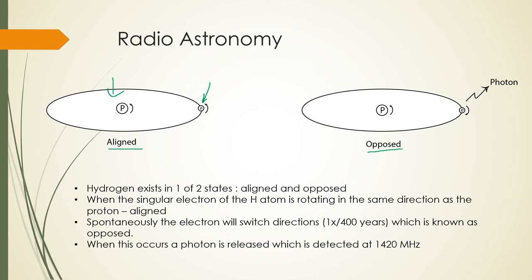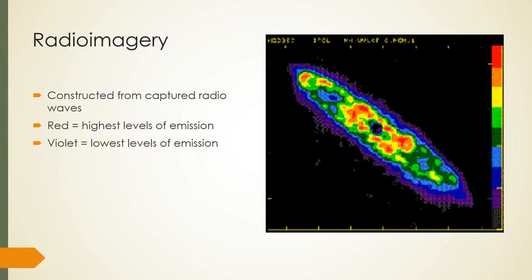In the opposed state, the proton and the electron go in opposite directions — this happens spontaneously once every 400 years, causing a photon to be released detectable at 1420 megahertz. Due to the abundance of hydrogen, this is very easily detected because there are many protons being involved at once. Radio imagery is constructed from the captured waves, and when given colors, red represents the highest levels of emission while violet represents the lowest.